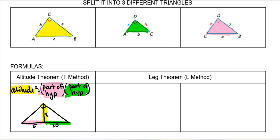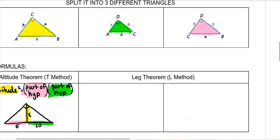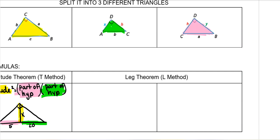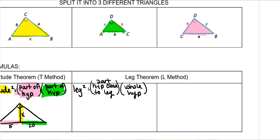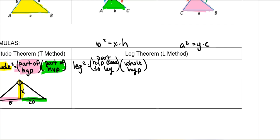The leg theorem, or L method, is a little different. The leg squared is equal to the part of the hypotenuse closest to that leg times the entire hypotenuse. So for the left leg, B squared equals X times H, and for the right leg, A squared equals Y times C.